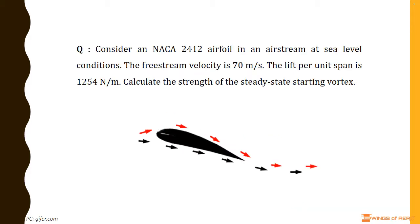Consider a NACA 2412 airfoil in an airstream at sea level conditions. The freestream velocity is 70 meters per second. The lift per unit span is 1254 newtons per meter. Calculate the strength of the steady-state starting vortex.